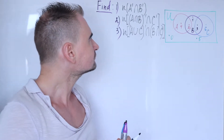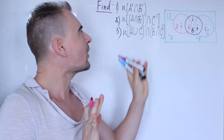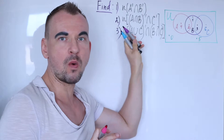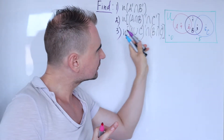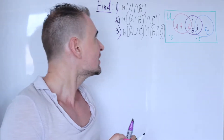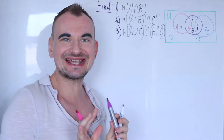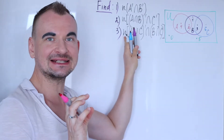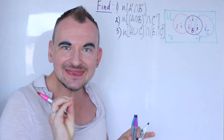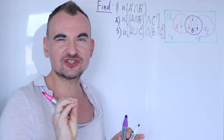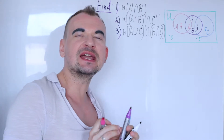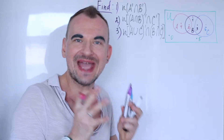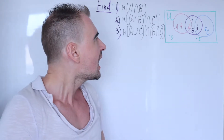You have to answer questions where you need to find the number of elements in different combinations of sets. In set theory, the small lowercase letter n represents the number of elements in a set — sometimes called the cardinality of a set, but most of the time it's just the number of elements in a set.